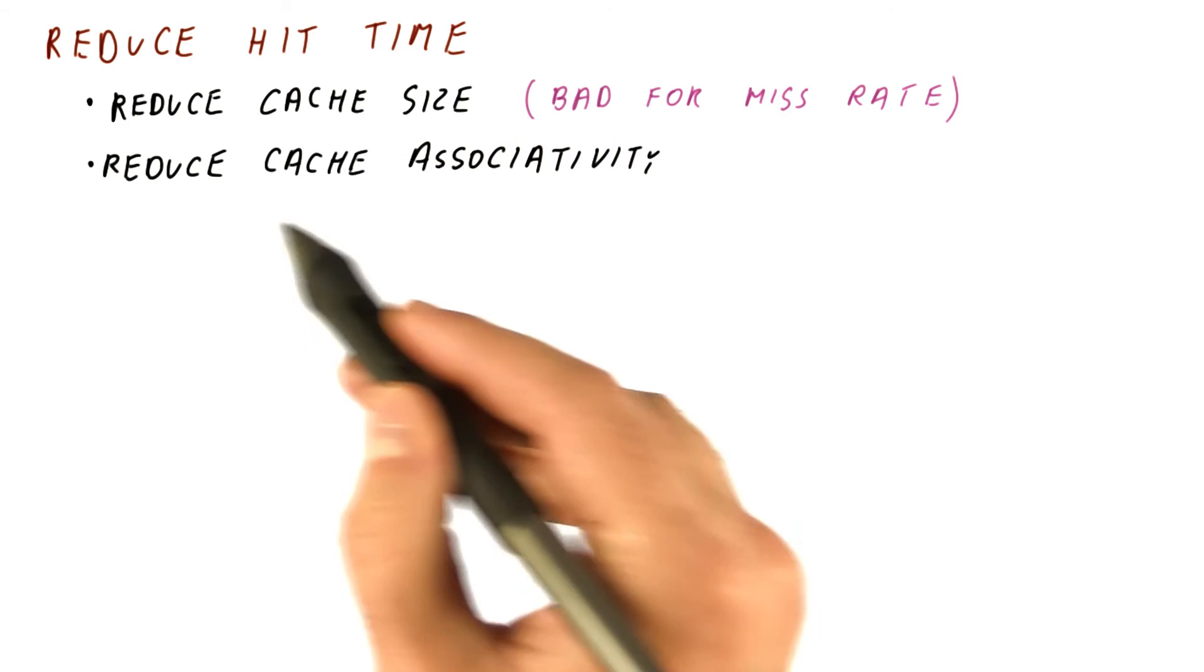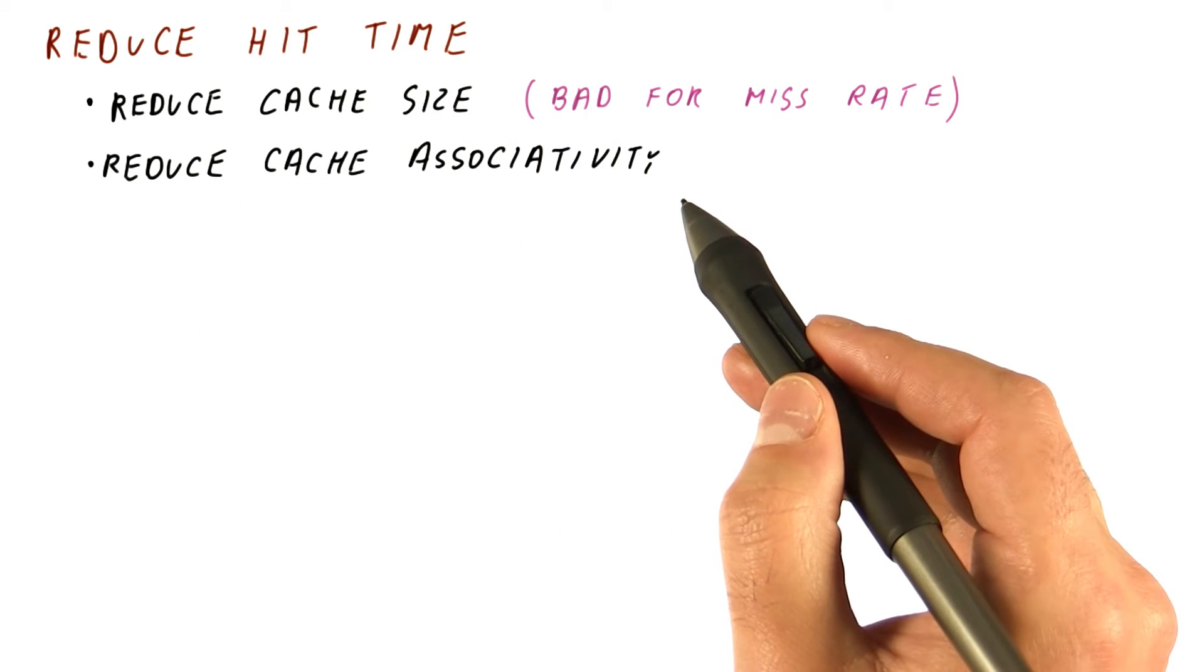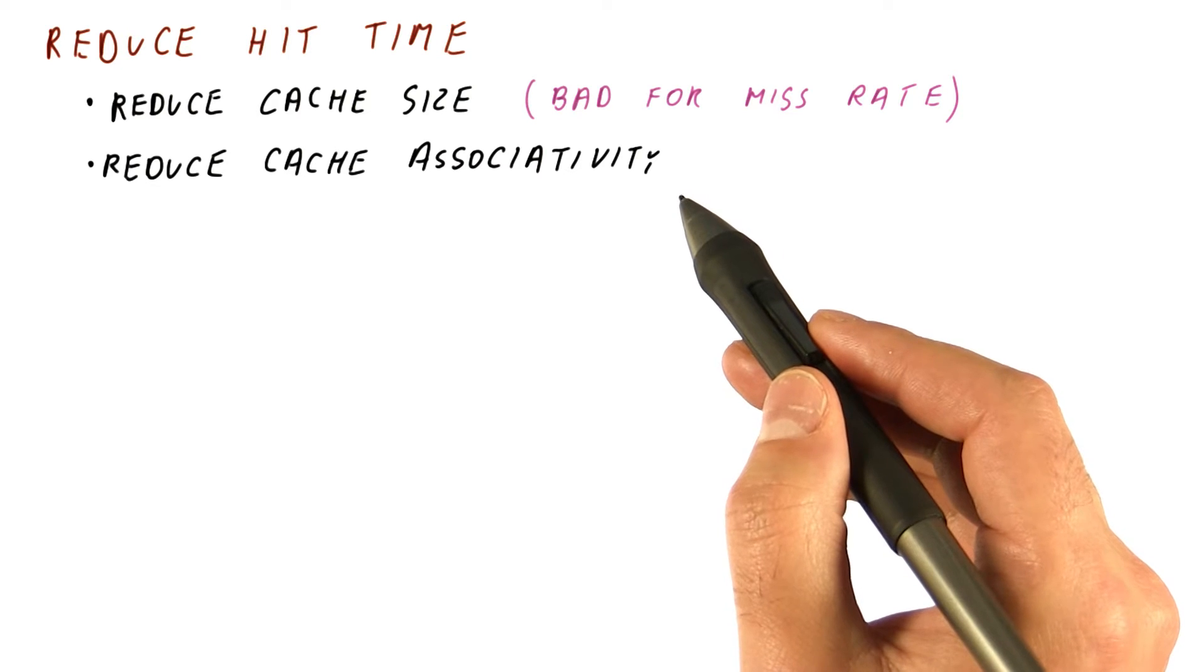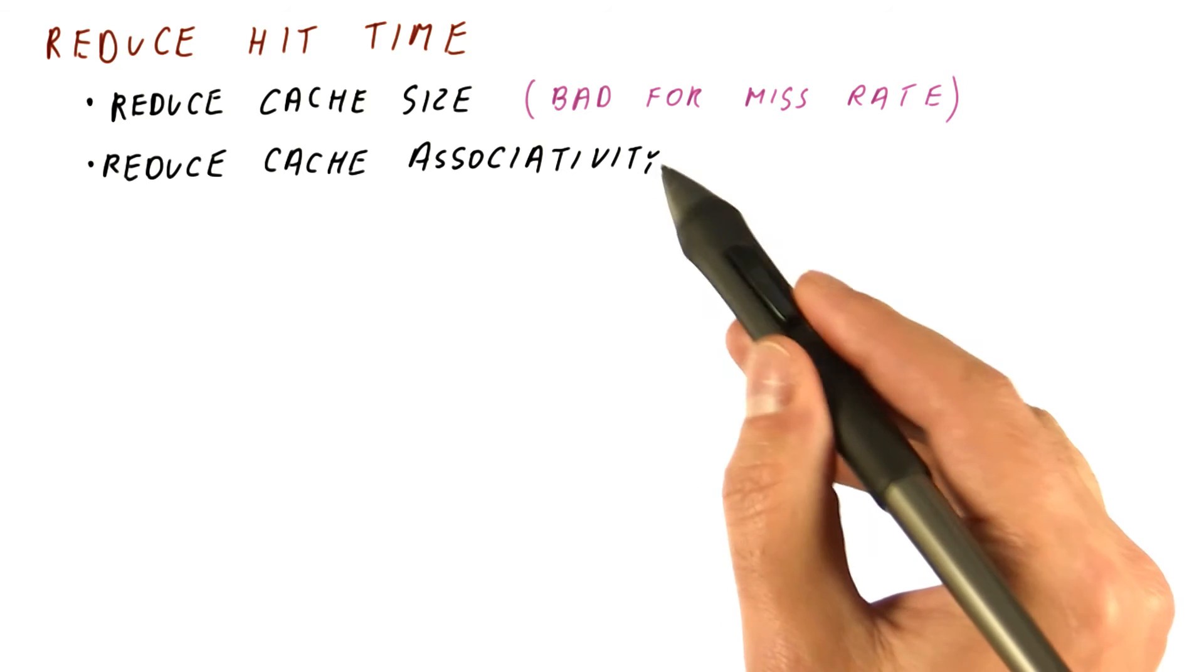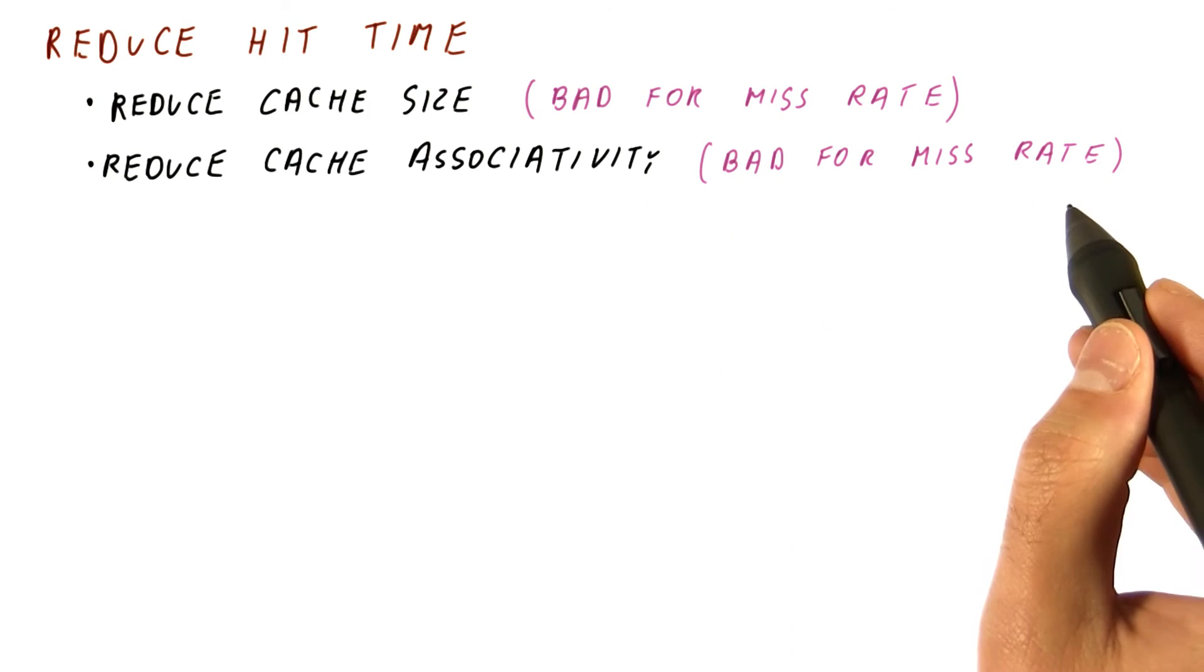The next simple method is to reduce the cache associativity. This is going to make the cache faster because we need to search in only one or few places for a block on a hit, but this is also bad for miss rate.